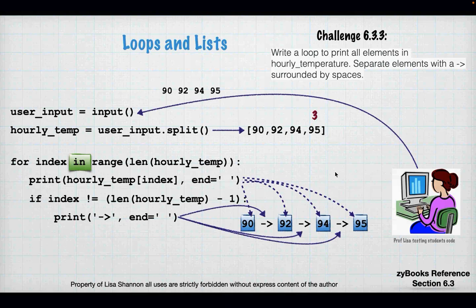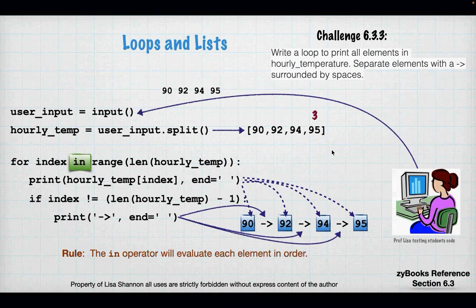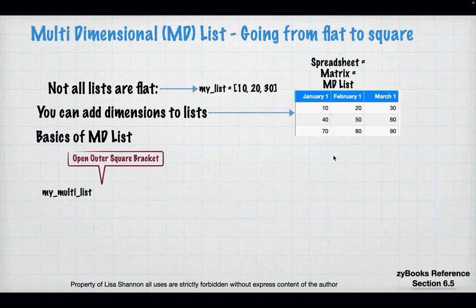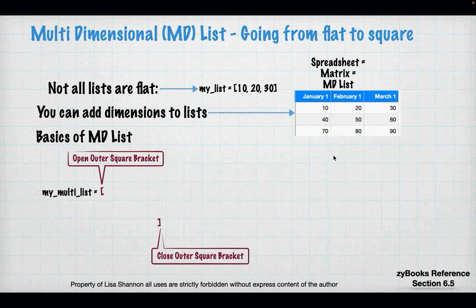That's how you handle something similar to one of your labs. The 'in' operator will evaluate each element in a list in order. Everything we've done so far is flat — just one long string of things in a list. But that's only a small part of what lists can do.